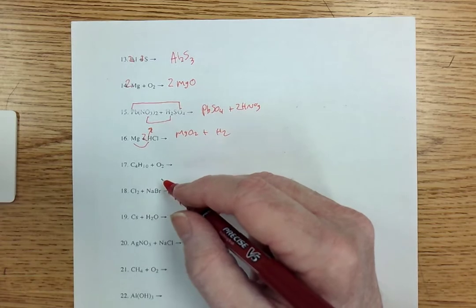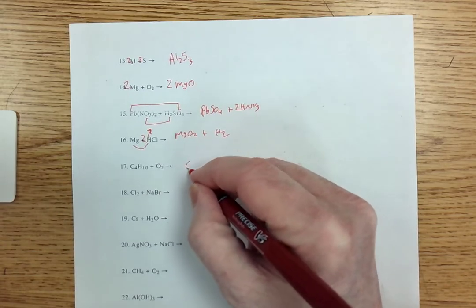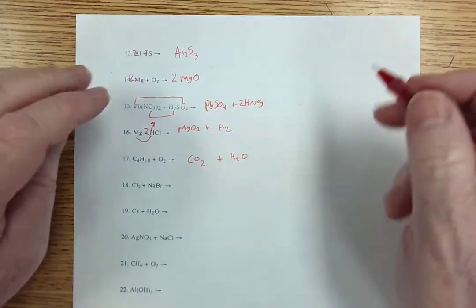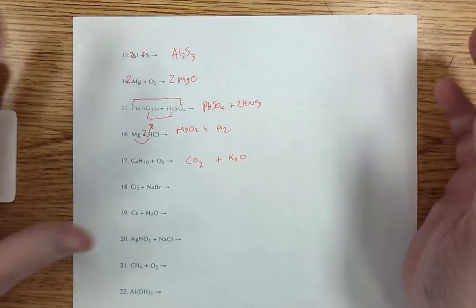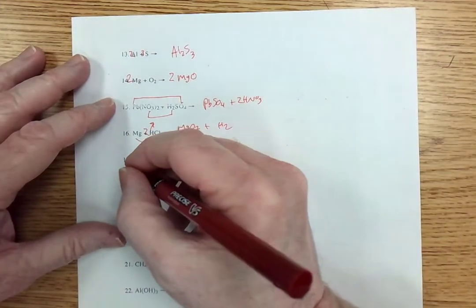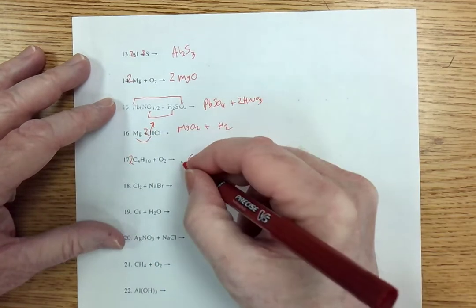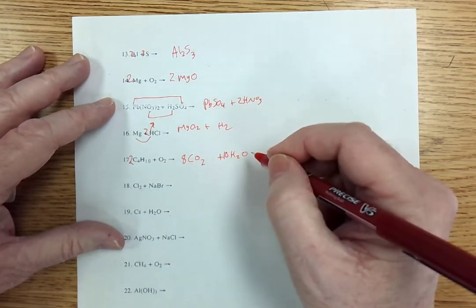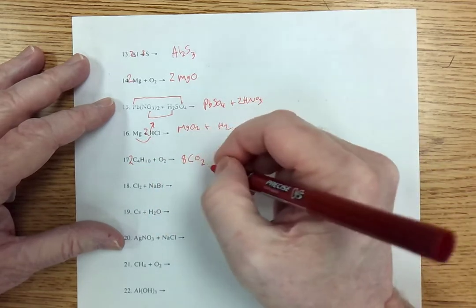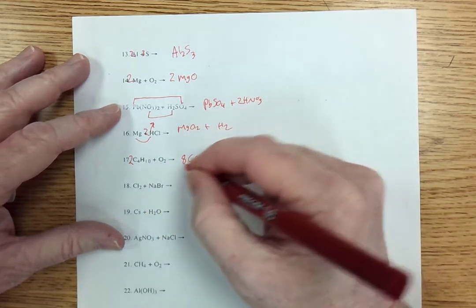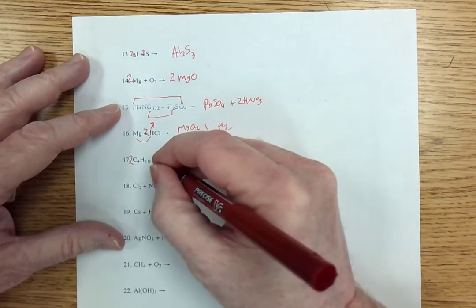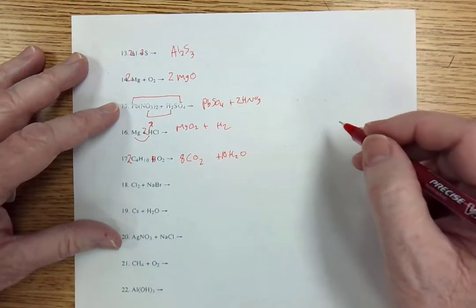Seventeen. A nice combustion of an organic compound, which always gives us carbon dioxide and water. This one's a little trickier to balance. You play around with it for a few minutes, and you find out you actually have to put a two there. An eight there. A ten here. And then this ends up being two times eight, sixteen, twenty-six, a thirteen.